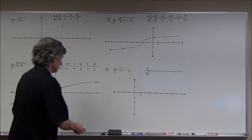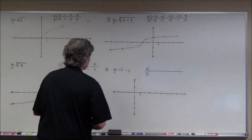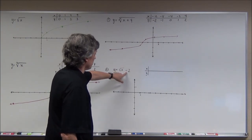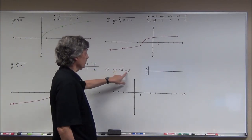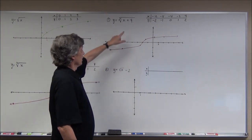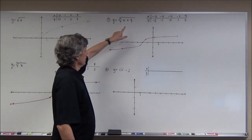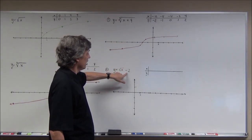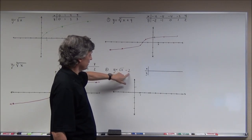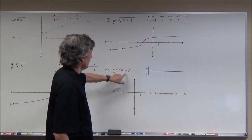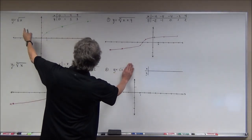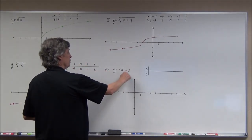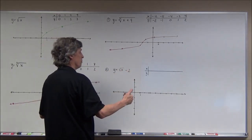Next, Problem 2: the square root of x minus 2. The minus 2 is on the outside of the square root, so this affects it vertically — it's going to drop the graph down 2 units. If you graph the parent square root and then put the minus 2, that makes all the y-values 2 smaller.